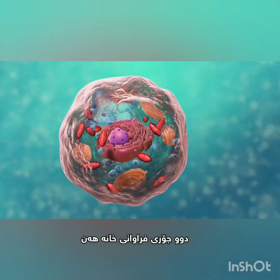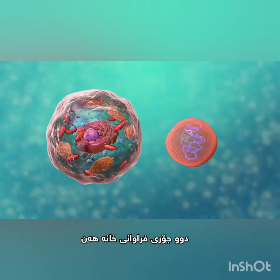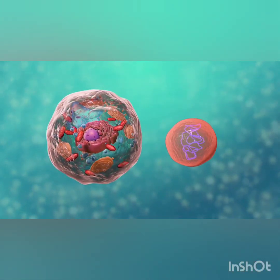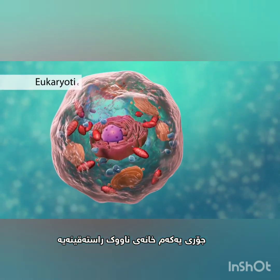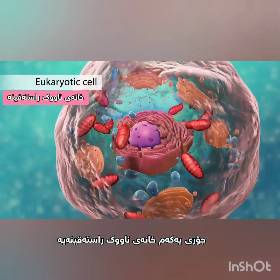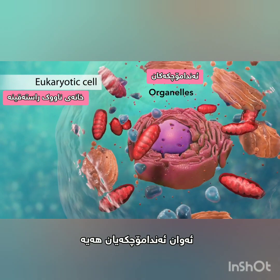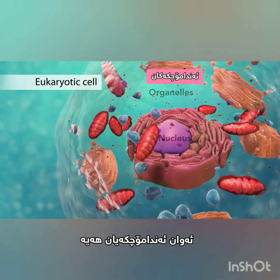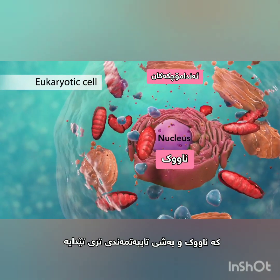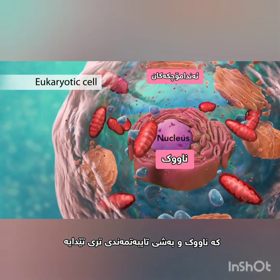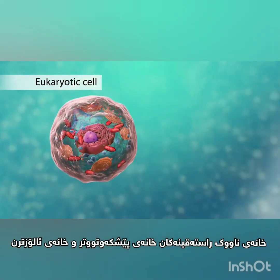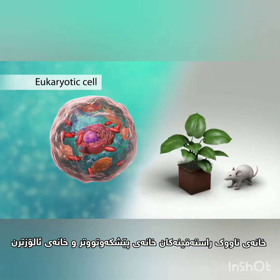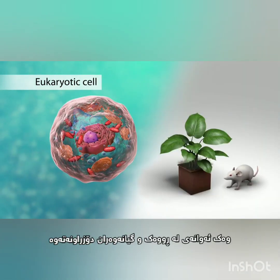There are two broad categories of cells. The first category is eukaryotic cells. They have organelles which include the nucleus and other special parts. Eukaryotic cells are more advanced complex cells such as those found in plants and animals.